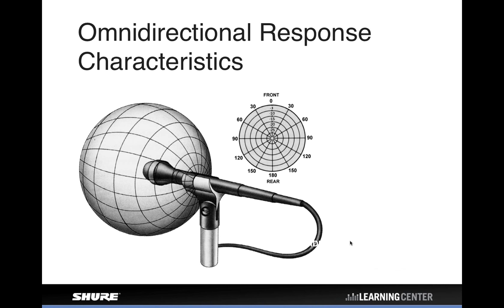Now let's talk about polar patterns — how a microphone responds to sound coming from different directions. You can't tell by looking at a microphone what its directional response will be. A lot of people assume the SM58 is omnidirectional because of its ball windscreen, but it's actually a unidirectional microphone. The two broad categories are omnidirectional — picking up sound from all directions — and unidirectional — picking up sound from one direction.